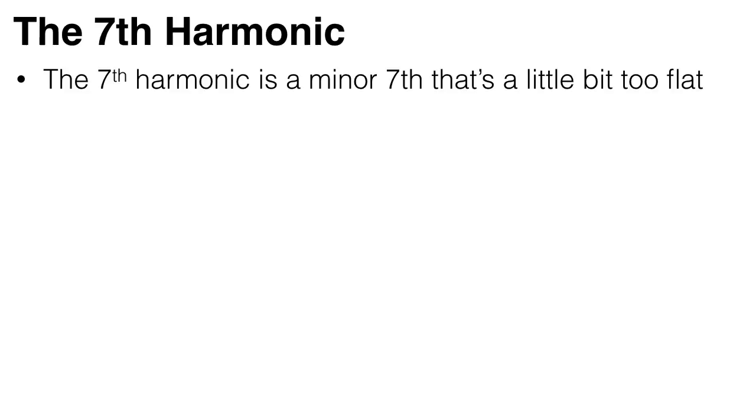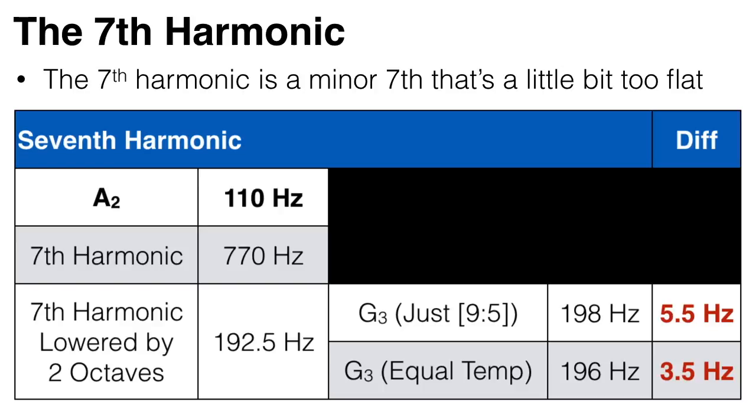The seventh harmonic is a minor seventh that's a little bit too flat. For example, if we take the note A at 110 Hertz, the minor seventh should be a G at 198 Hertz, using just intonation.